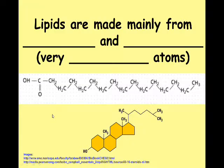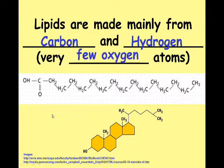Lipids are made mainly out of carbon and hydrogen. We saw those atoms also in carbohydrates and in our proteins in our first two slideshows. What makes lipids very different from the other three macromolecules is they have very few oxygen atoms.